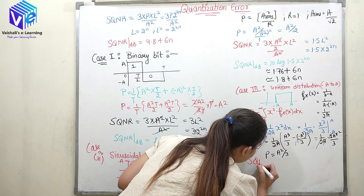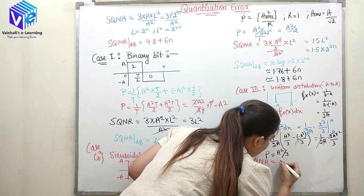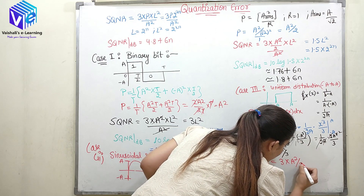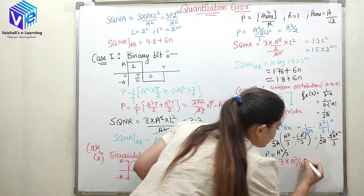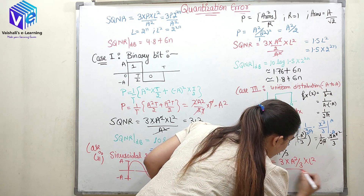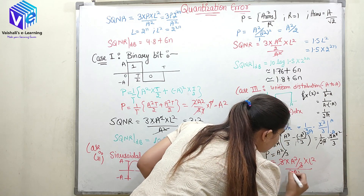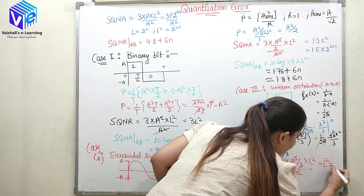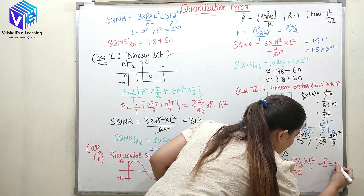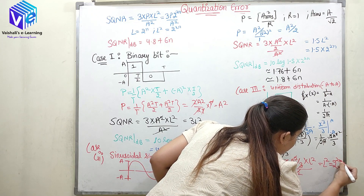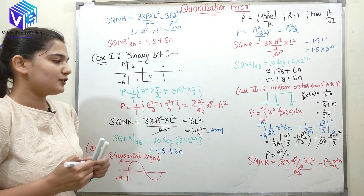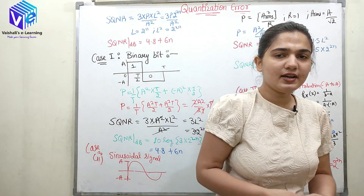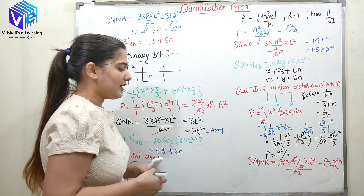Substituting this power into the SQNR formula: SQNR equals 3 times A squared upon 3 times L squared upon A squared. The 3's cancel and A squared terms cancel, leaving SQNR equal to L squared, which is 2 raised to power 2N. This is a very simple SQNR result for the uniform distribution case.